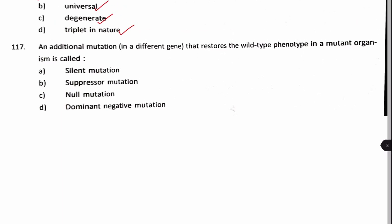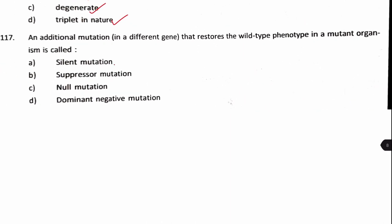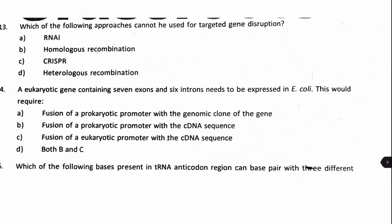Next question: an additional mutation that restores the wild-type phenotype in a mutant organism is called a silent mutation, suppressor mutation, null mutation, or dominant negative mutation? The answer is suppressor mutation — when a second mutation in the same organism restores the non-functionality caused by a previous mutation, it is called a suppressor mutation. Answer: option B.